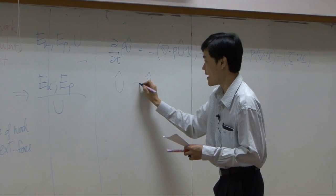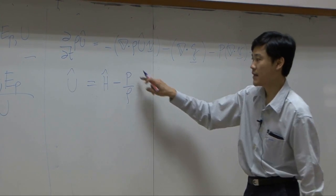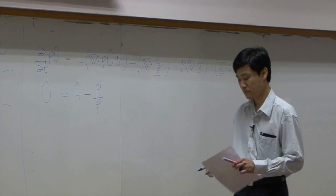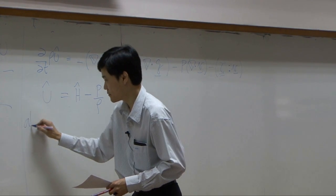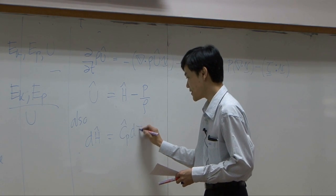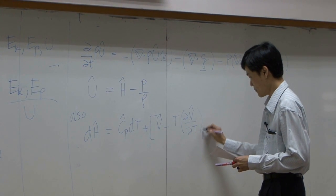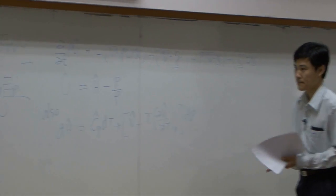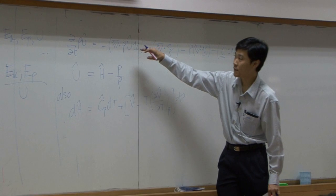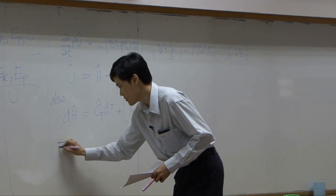You can see that internal energy U is H minus P divided by rho, because enthalpy H equals U plus PV, and V is just one over rho. We can also convert enthalpy into temperature as we did in our last example. Starting from here, we convert internal energy to enthalpy, and then convert enthalpy to a function of temperature. As a result, you get this equation.